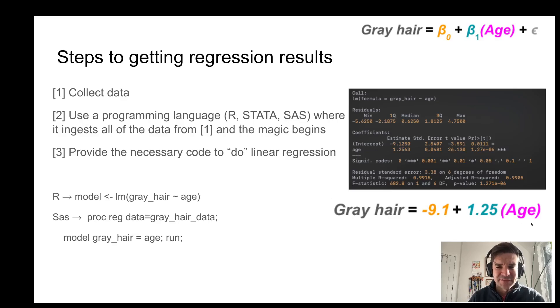So for each one unit or one-year increase in age, the number of gray hairs in this very made-up example would be 1.25 more hairs. Trust me, physicians, it's a lot more than that each year.